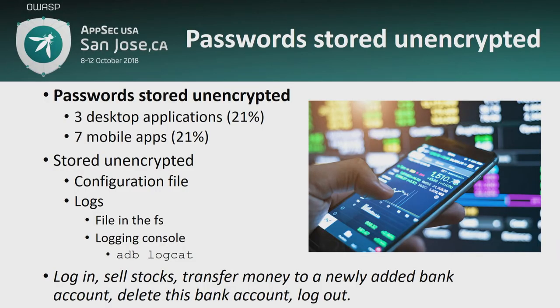Let's move on to unencrypted passwords. This is the most important thing because if an attacker has your password, they can log in to the platform. Two-factor authentication is supported by most brokers, but it's not enabled by default. If an attacker steals your password, they can log in, connect a new bank account, sell all your positions, move the liquid money to that bank account, remove the link, and log out. The problem is that in 21% of mobile apps the password is stored unencrypted, and in 21% of desktop applications as well. Desktop applications are the most insecure ones.